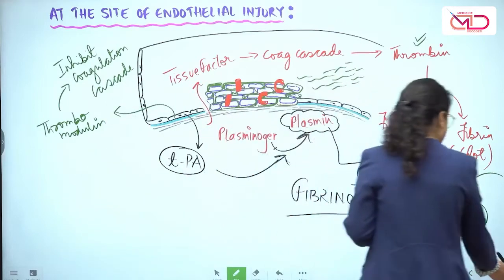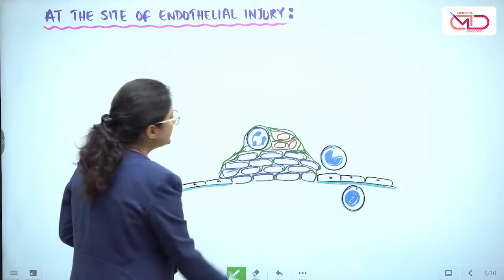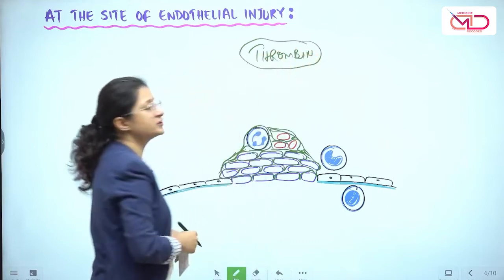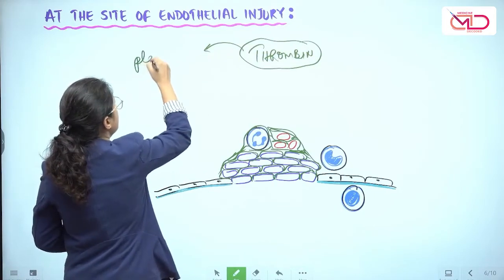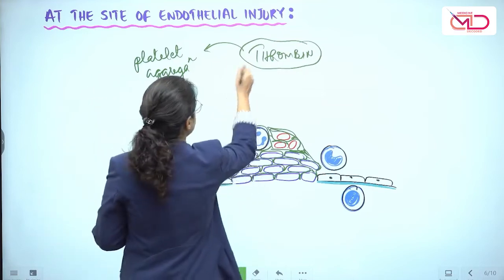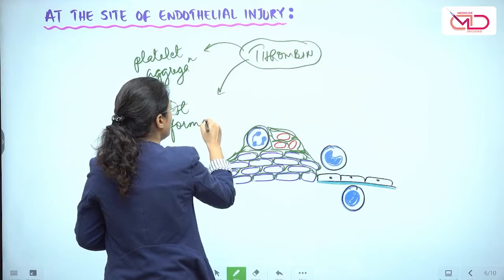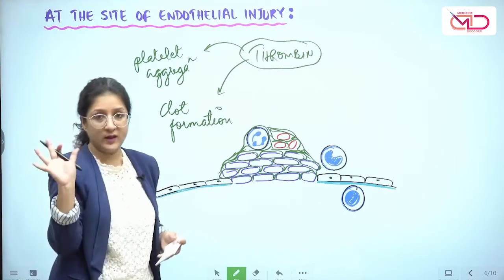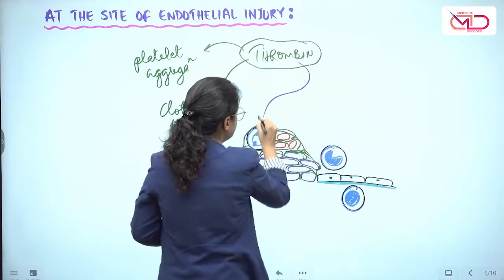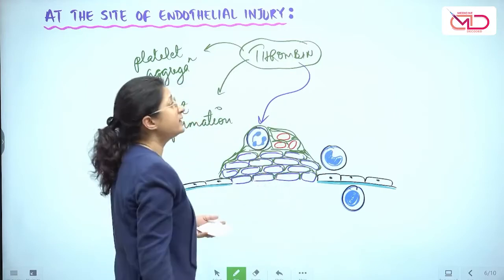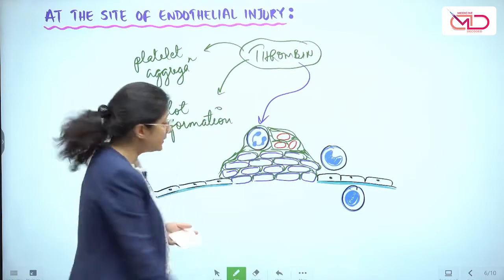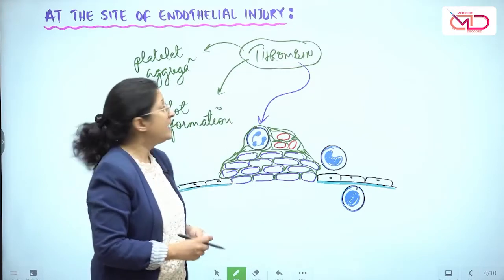Ultimately, thrombin is our very important molecule from the coagulation cascade. Thrombin itself leads to more platelet aggregation in the area of injury and leads to clot formation, sealing the site of injury once and for all. But it is the same thrombin which also triggers neutrophil adhesion, further cementing the clot. RBCs are also trapped in this clot. Ultimately this clot needs to be digested and will not stay permanently — angiogenesis and repair also have to follow.